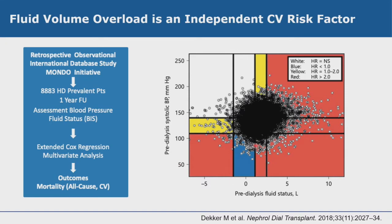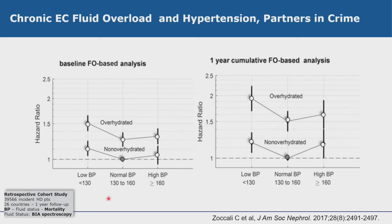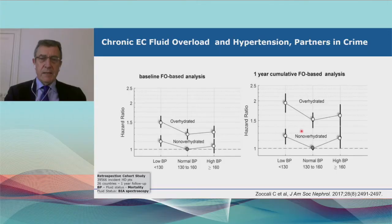Interestingly, fluid overload per se, without hypertension, is also associated with high mortality risk — meaning that sodium independently from pressure level is a risk factor for cardiovascular mortality. In this incident population starting dialysis within six months, fluid overload is associated with a 40–50% increase in mortality independently from pressure level. If uncorrected one year later, mortality risk increases by almost 50%.